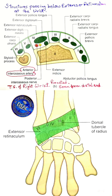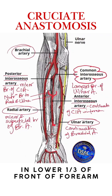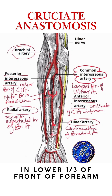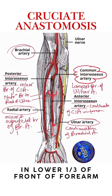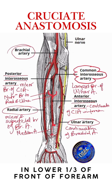It's an anterior interosseous artery, but it passes below the extensor retinaculum. What about its continuation here in the lower one-third of the front of the forearm? The continuation of this anterior interosseous artery in the front of the forearm in the lower one-third is sometimes called by some authors as the median artery. And it participates in a cruciate anastomosis here.